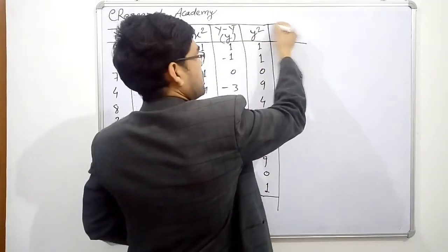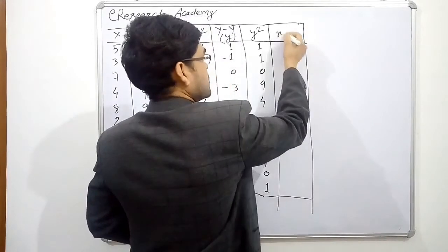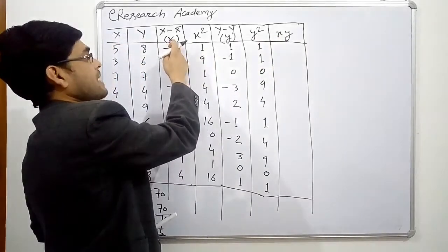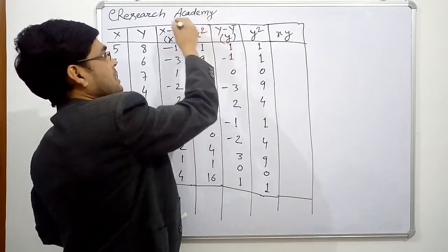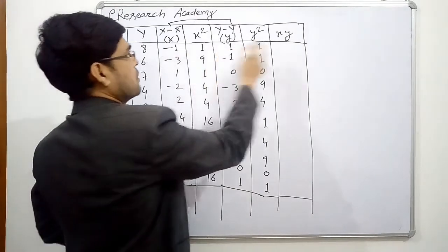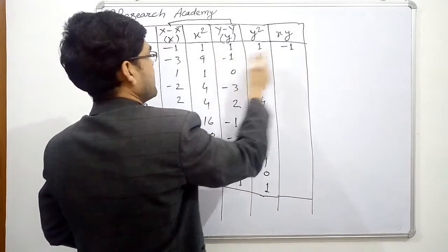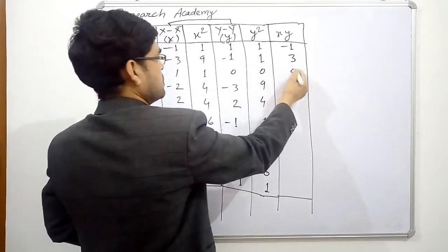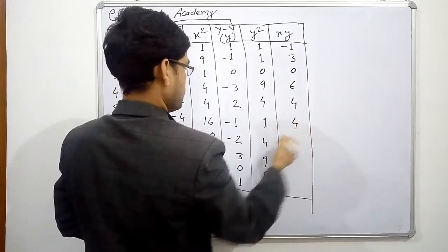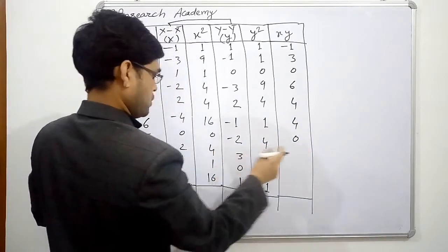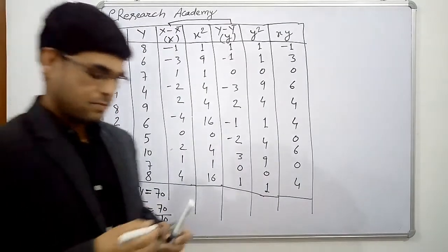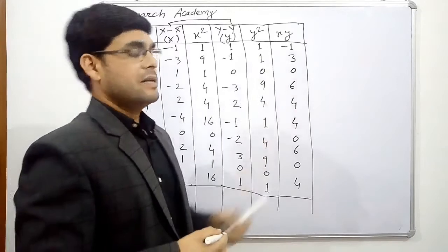The last column we need is the product of the deviations: x times y, that is small x multiplied by small y. So: −1×1 = −1, −3×(−3) = 3 (wait, −3×(−1) = 3), 1×0 = 0, −2×(−3) = 6, 2×2 = 4, 4×1 = 4, 0×(−2) = 0, 2×3 = 6, 1×0 = 0, 4×1 = 4. These are the products of the deviations.